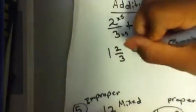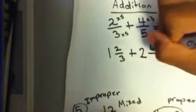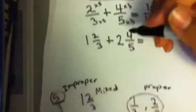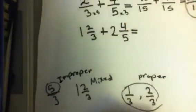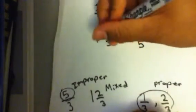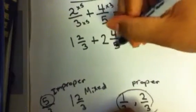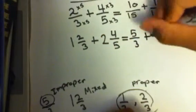Now, if you want to do a harder question — say it's 1 and 2 over 3 plus 2 and 4 over 5 — you need to change it into an improper fraction to make it easier to add. And how you do that is what I showed you before. So multiply 3 times 1, then plus 2, which equals 5 over 3. Plus, 5 times 2 equals 10, and 10 plus 4 equals 14 over 5.